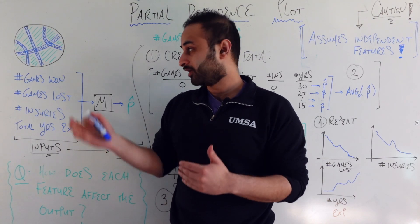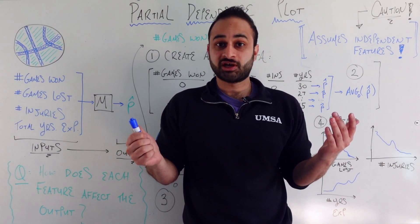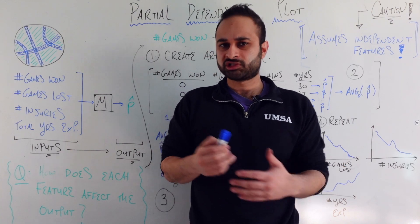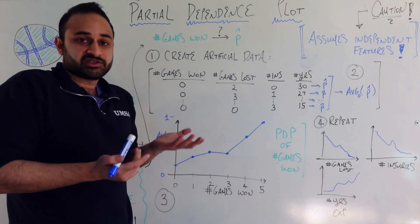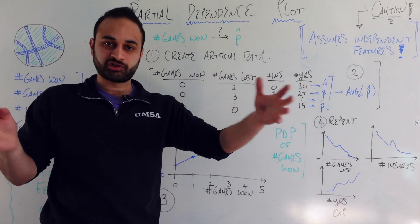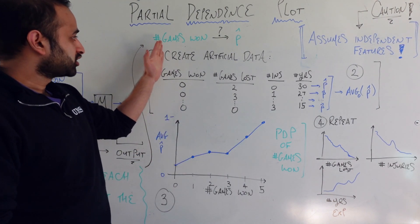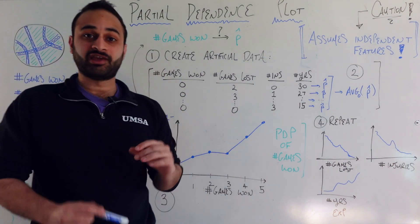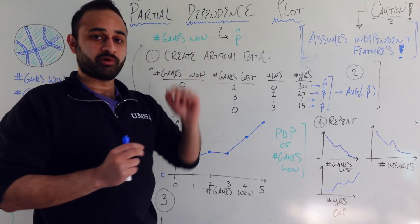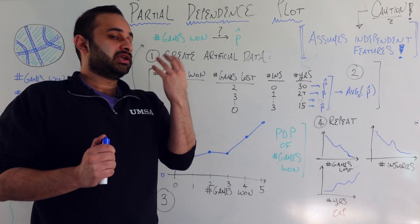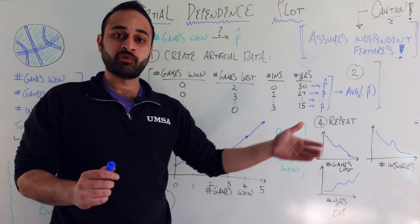The partial dependence plot helps answer this question: how does each of the four features, by itself, affect the final predicted probability? Here's the process. First, you take your original dataset — which has these four features across many different basketball team observations — and create some artificial data. The specific question right now is: how does the number of games won affect the final predicted probability?